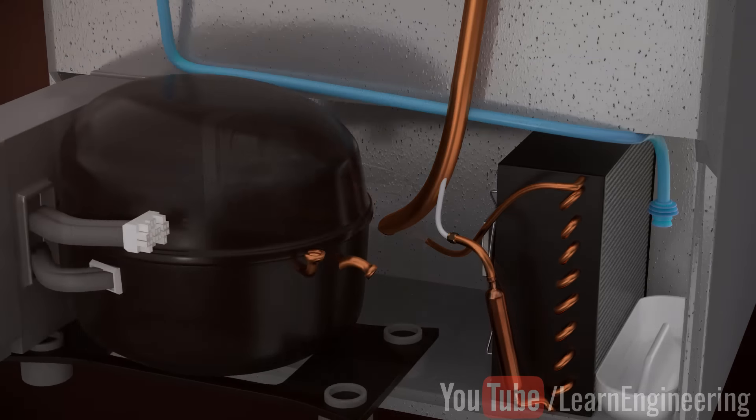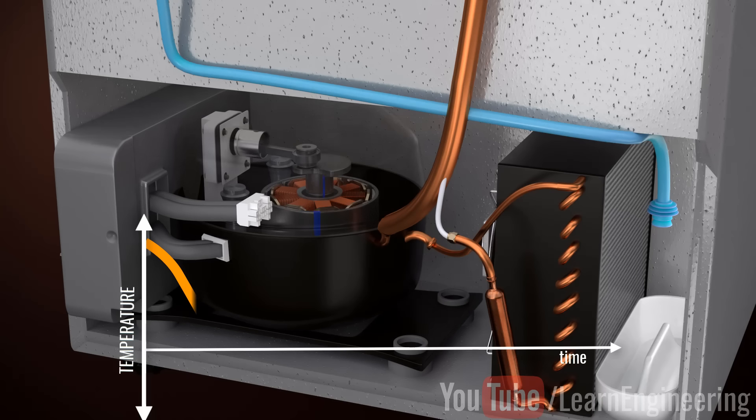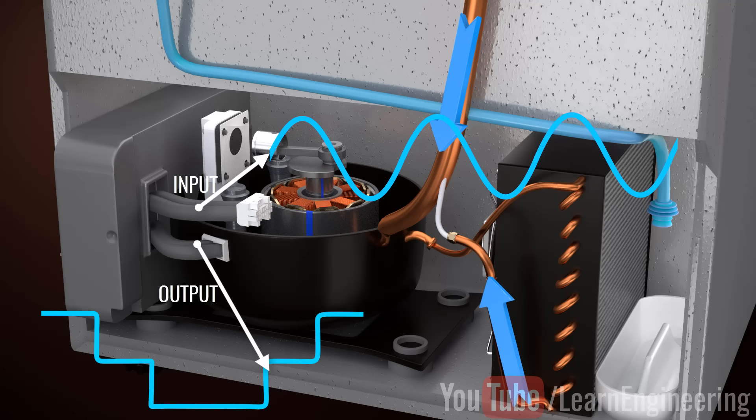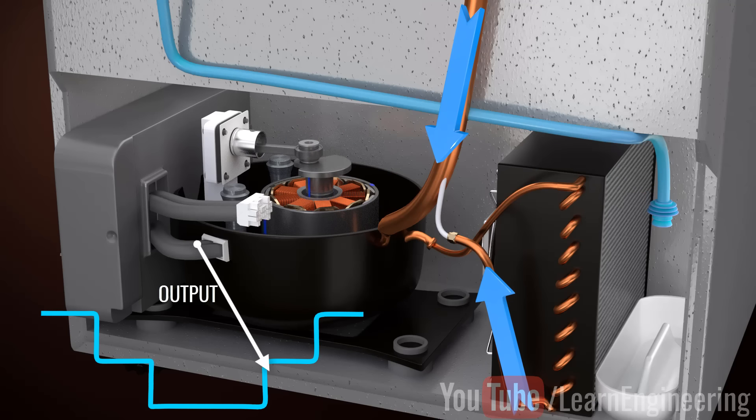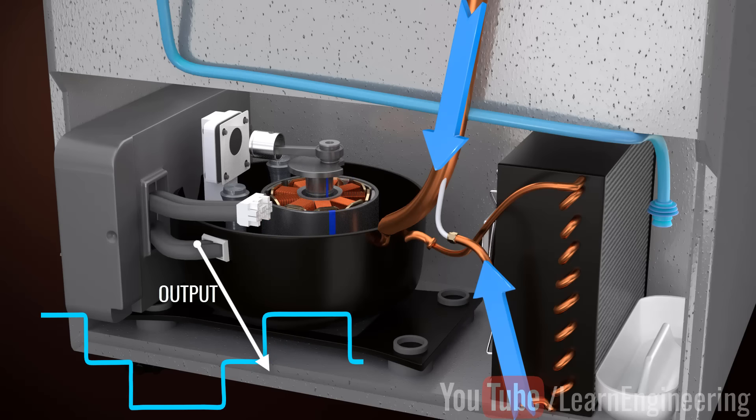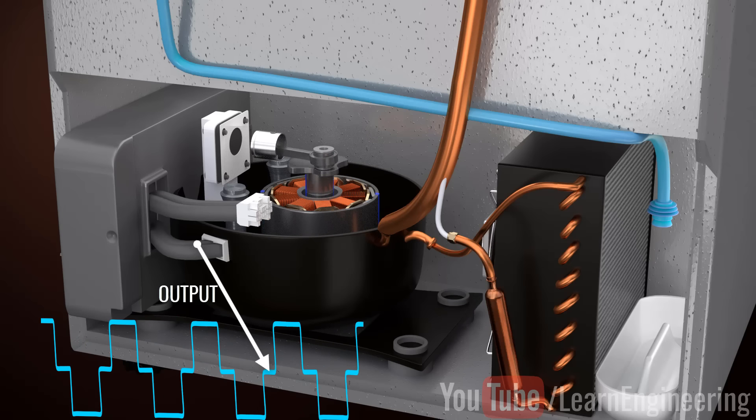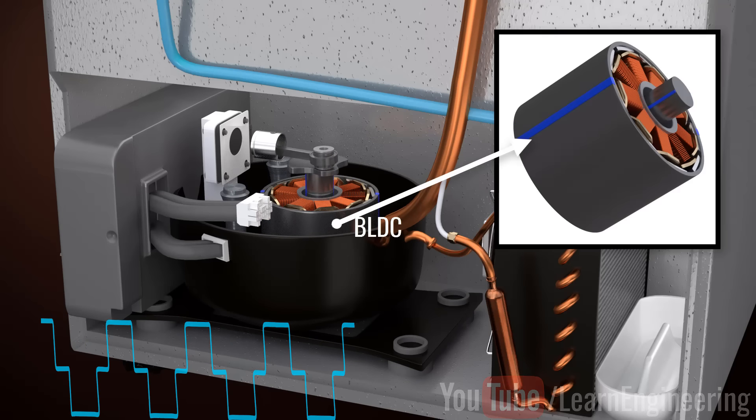With the help of Digital Inverter Compressor, a variable compressor speed is possible. Thus, a smooth and efficient evaporator temperature control can be achieved here. Here, the AC power is converted to DC using a controller. The controller then supplies electric power in variable frequency to accurately control the motor speed. The most common motor used in this technology is a BLDC.